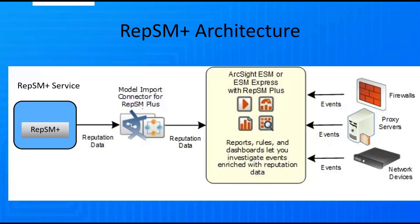The third piece of RepSM Plus is the content that runs on ArcSight ESM. This content provides several functions, including the ability to correlate in real time the imported threat data with the security events happening in your environment. This allows you to detect and remediate security issues caused by interaction with suspicious and malicious Internet locations. The combination of security event data and outside indicators of compromise greatly increases your ability to catch malicious events and reduces the overall time to remediation, increasing security visibility and awareness in your environment.